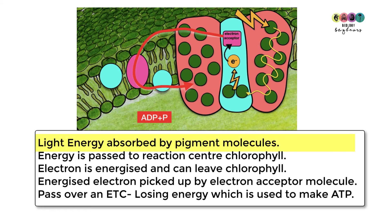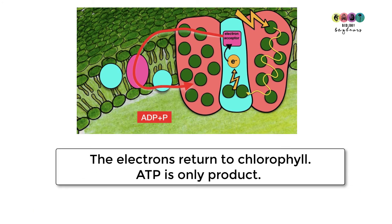Light energy is absorbed by pigment molecules and passed from pigment molecule to pigment molecule until it reaches a reaction center chlorophyll. This results in an electron being energized so much that it can leave chlorophyll. It's picked up by an electron acceptor molecule and eventually passes over an electron transport chain where it loses that excess energy, and that energy is used to make ATP. The big deal is that those energized electrons will one by one return to chlorophyll, and the only product made is ATP.